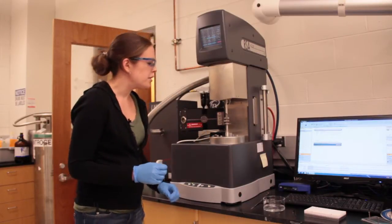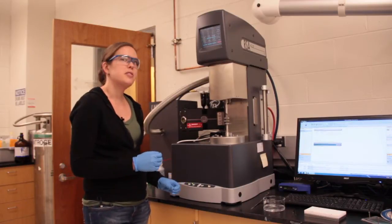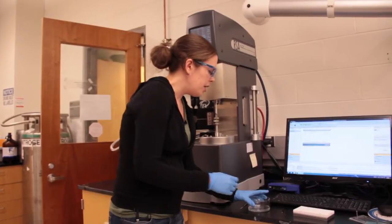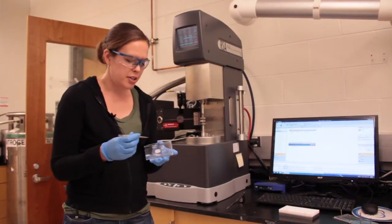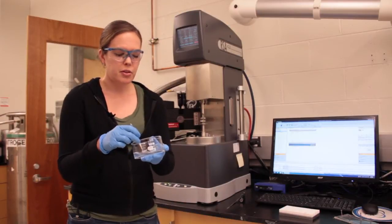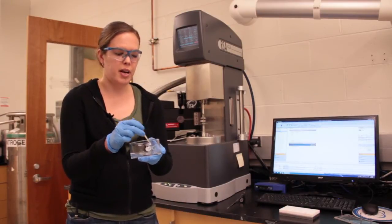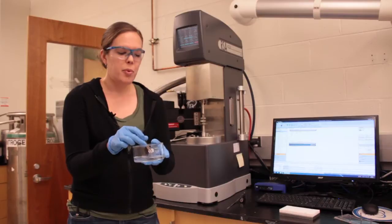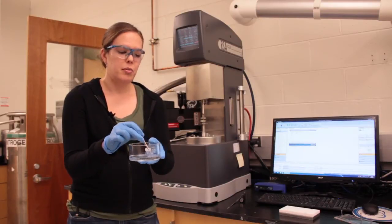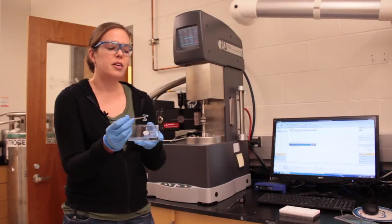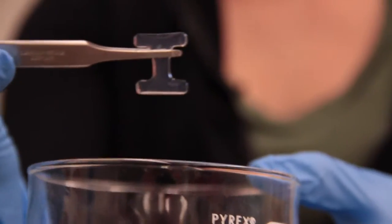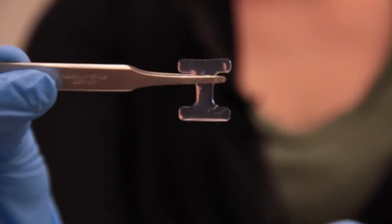The first material we're going to show today is a block copolymer micelle cross-linked hydrogel. These are acrylamide gels, but instead of a traditional cross-linker, they're cross-linked by a block copolymer micelle which can reversibly deform, making the hydrogels very elastomeric. You can see here that they can swell 10 to 20 times in water.